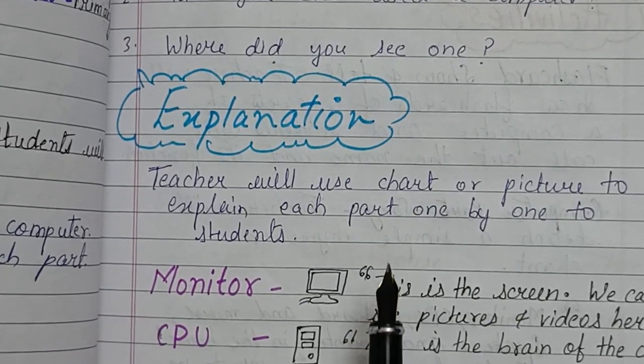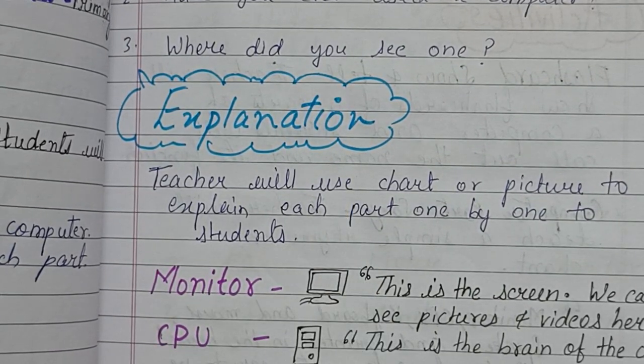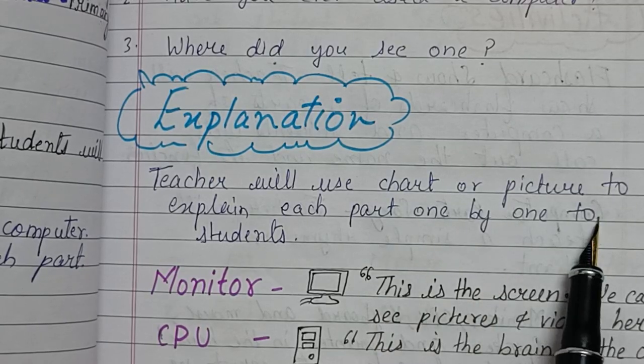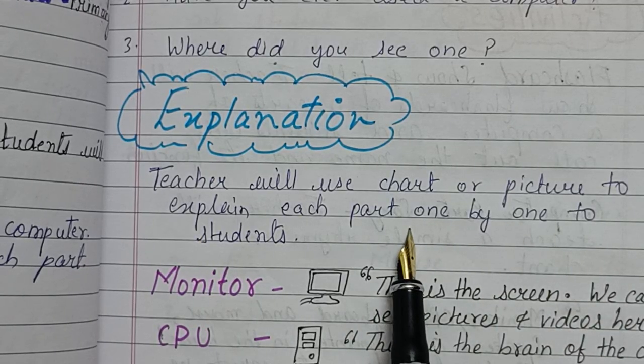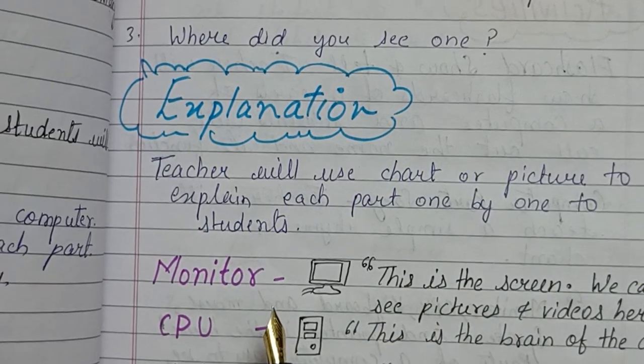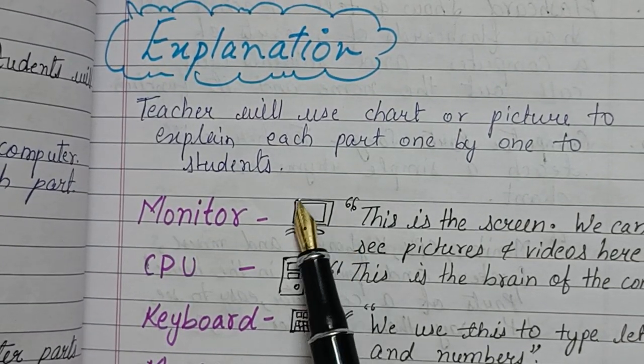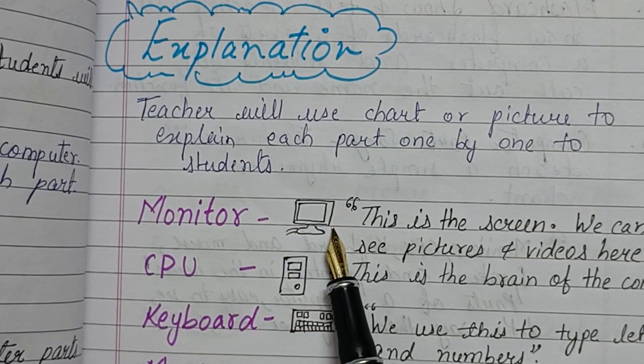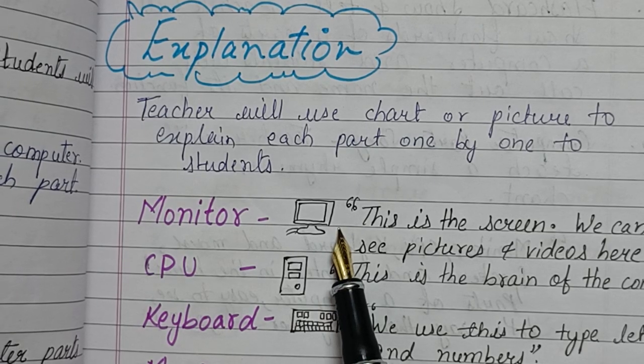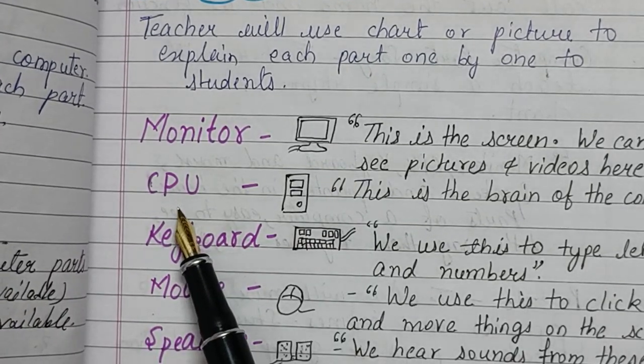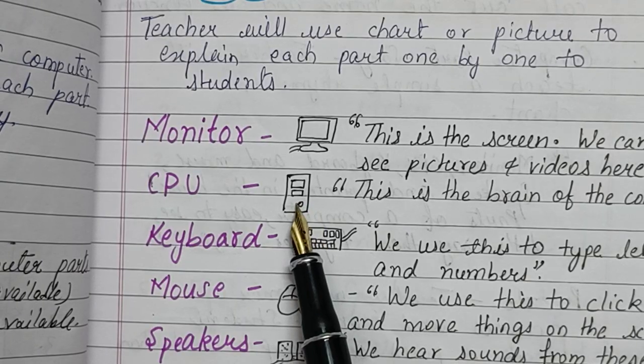Next, explanation: teacher will use chart or picture to explain each part one by one to students. First, monitor: this is the screen where we can see pictures and videos. CPU: this is the brain of the computer.